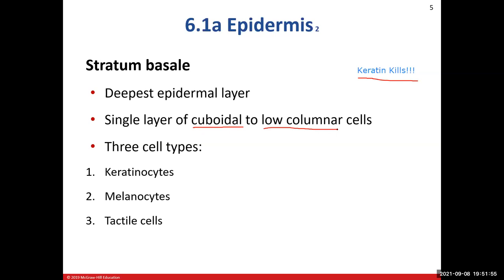You might ask: if the epidermis is made of keratinized stratified squamous epithelium, why are these cells cuboidal or low columnar? When naming stratified epithelium, we always name it based on the apical layer — whatever the cells look like on top. So even though they start off cuboidal or low columnar at the base, they eventually flatten out and turn into squamous cells.